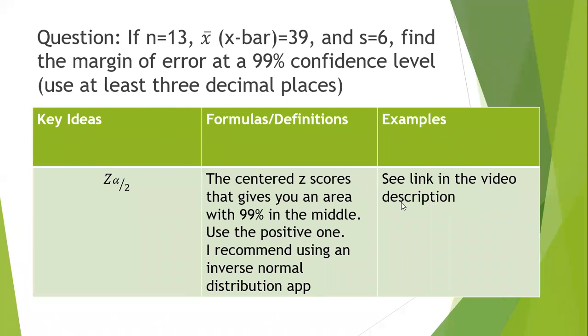So this is one inverse normal distribution app that I like. I'll link it in the comments. What you're going to do is tell it what you want. In our case, we were looking at a 95% confidence interval for bacteria. We're just going to use a mean of zero and a standard deviation of one because we want that z alpha over two, which means we need between.